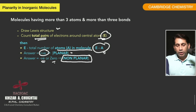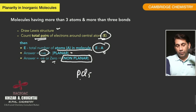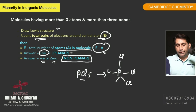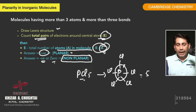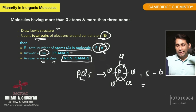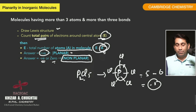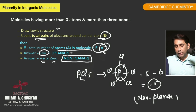It means not all atoms will be in one plane. For example, PCl5: in the Lewis diagram, five pairs are surrounding the phosphorus, so E equals 5. The number of atoms is five Cl plus one P = 6, so A equals 6. Therefore E minus A = 5 minus 6 = negative one, a negative integer. So this molecule is non-planar.